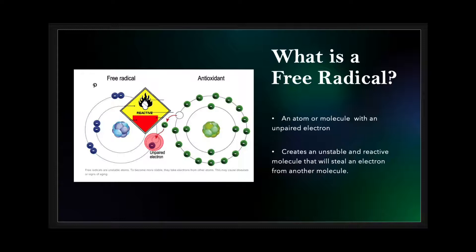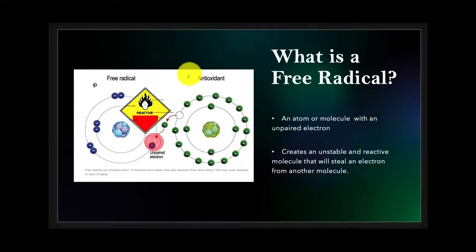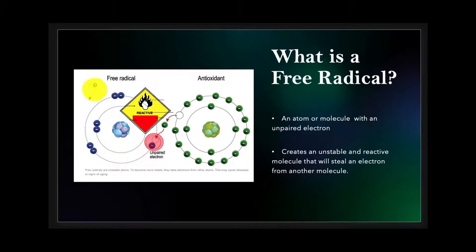This can also lead to mutations in the gene. But again, we have systems in place — antioxidants — and we also have other enzymes such as superoxide dismutase and catalase that help neutralize and create a less aggressive form of this reactive radical. We do have systems in place that can take care of that.